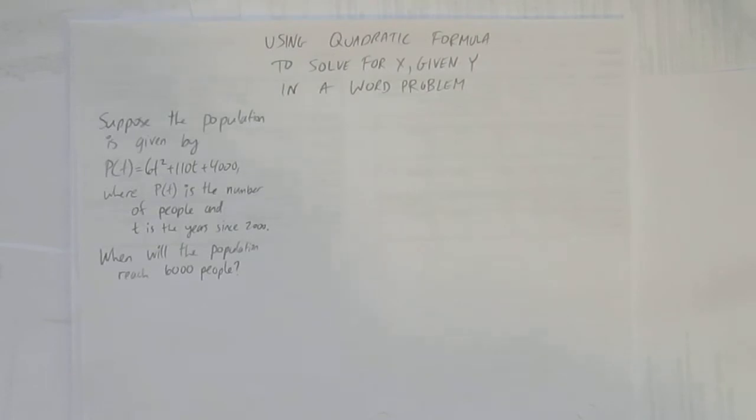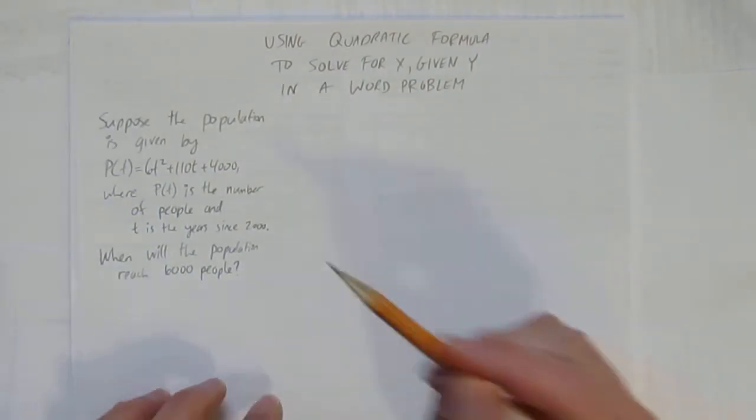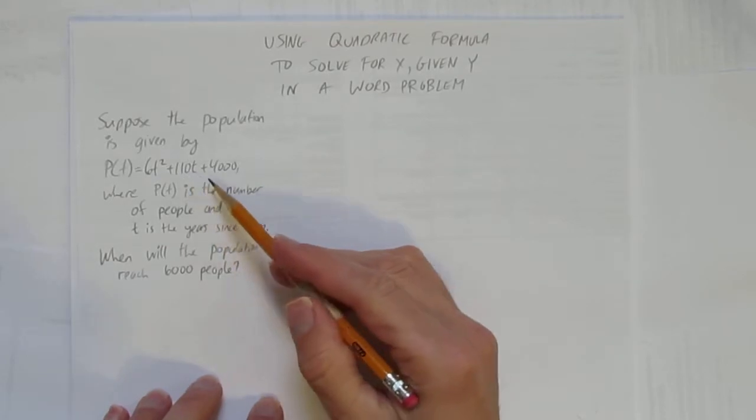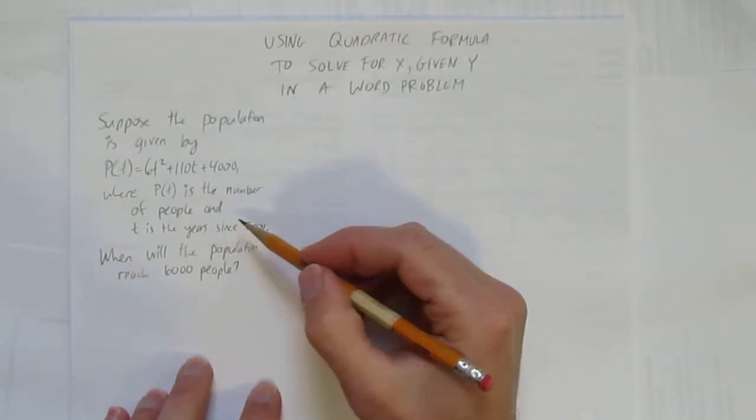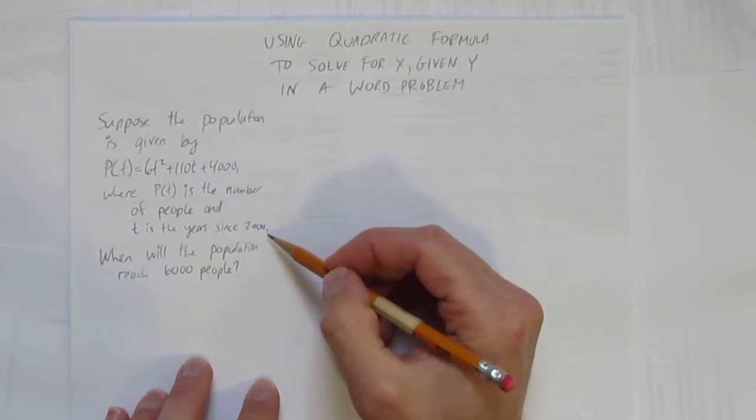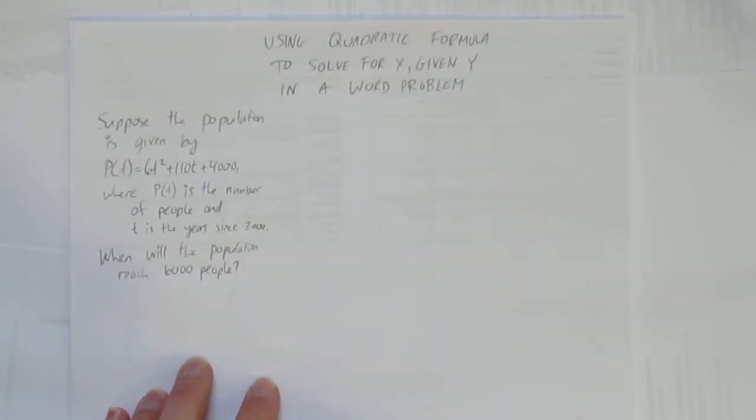The word problem is: suppose the population is given by P(t) equals 6t squared plus 110t plus 4,000, where P(t) is the number of people and t is the time in years since the year 2000. When will the population reach 6,000 people?